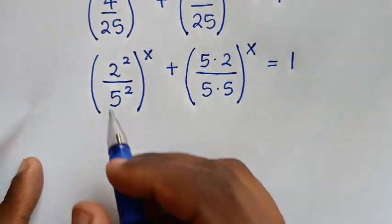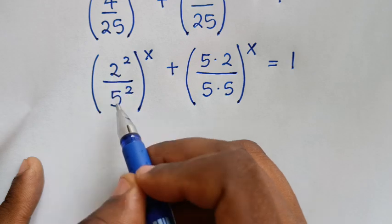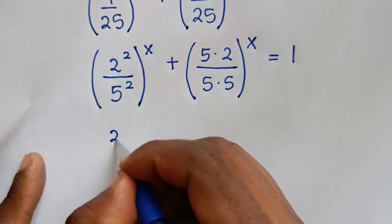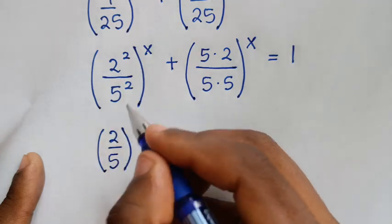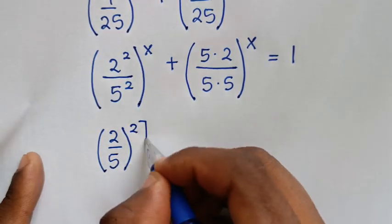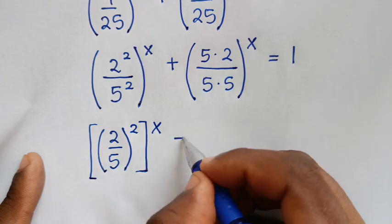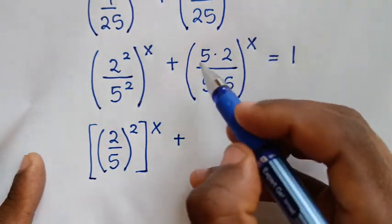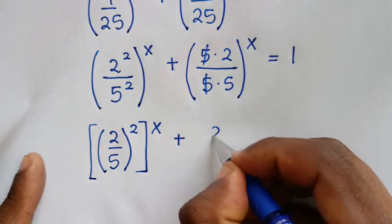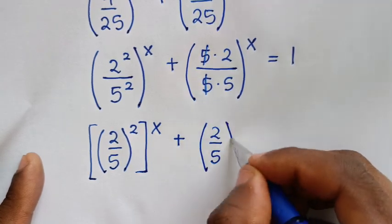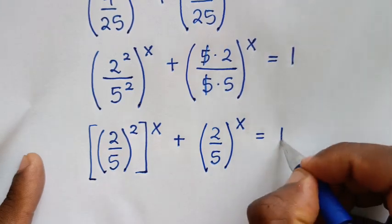In the next step, the power of 2 is common so we take it outside the bracket. From (2²/5²)^x we get (2/5)^(2x), and from (10/25)^x we simplify to get (2/5)^x. So the equation becomes (2/5)^(2x) plus (2/5)^x equals 1.